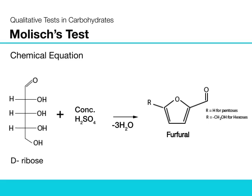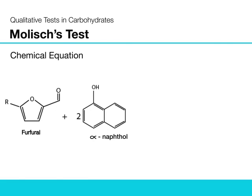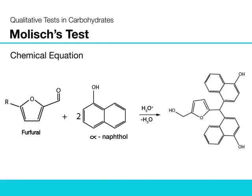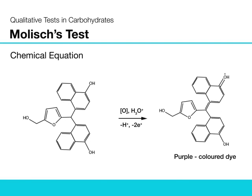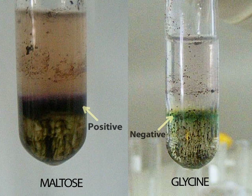Carbohydrates dehydrate in the presence of concentrated sulfuric acid to yield furfurals or furfural derivatives. Furfurals or their derivatives react with alpha-naphthol in Molisch reagent to yield the purple colored complex molecule, seen as the positive result. Although this test will detect compounds other than carbohydrates such as glycoproteins, a negative result will indicate the absence of carbohydrates.